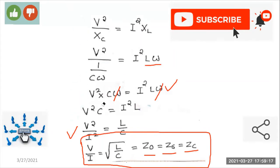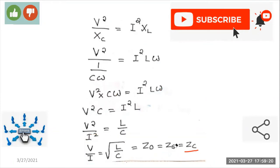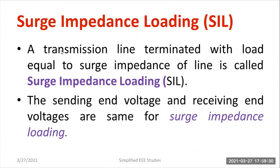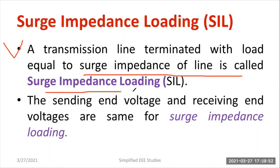This expression will be helpful for numerical examples. In the next session, I'm going to solve one numerical example based on this equation — it is an important problem for examinations as well as design purposes. Moving on, there is another terminology: surge impedance loading, also known as SIL. A transmission line terminated with a load equal to the surge impedance of the line is known as surge impedance loading.